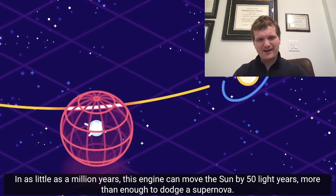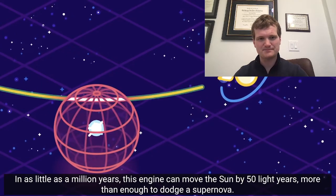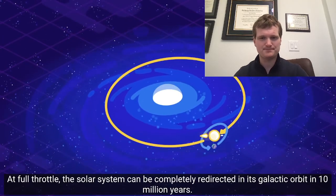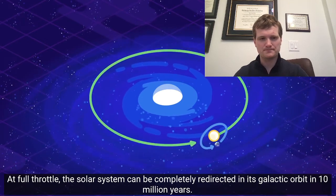In as little as a million years, this engine can move the sun by 50 light-years, more than enough to dodge a supernova. At full throttle, the solar system can be completely redirected in its galactic orbit in 10 million years. But wait.